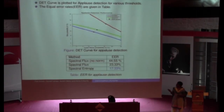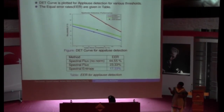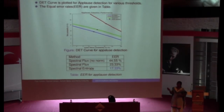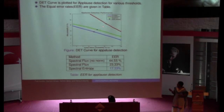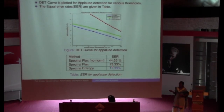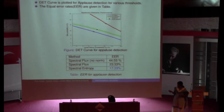Based on that ground truth, I plotted the DET curve for all 19 concerts and calculated equal error rates. The DET curve is plotted for different types of thresholds, and for a particular threshold the equal error rate is calculated. Spectral entropy is giving me a 17.33 percent equal error rate, which is the best result compared to the two spectral flux normalization techniques.